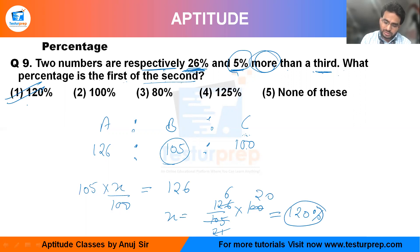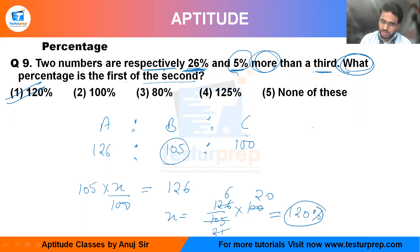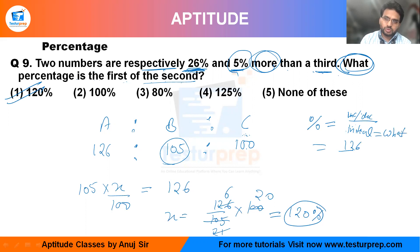There is a shortcut as well. When calculating a percentage, the value in the denominator is always the initial reference value. In this case, we need to find what percent 126 is of the second number. The 'of what' value is the initial value, which becomes 105. So 126 divided by 105 multiplied by 100 gives 120 percent directly.